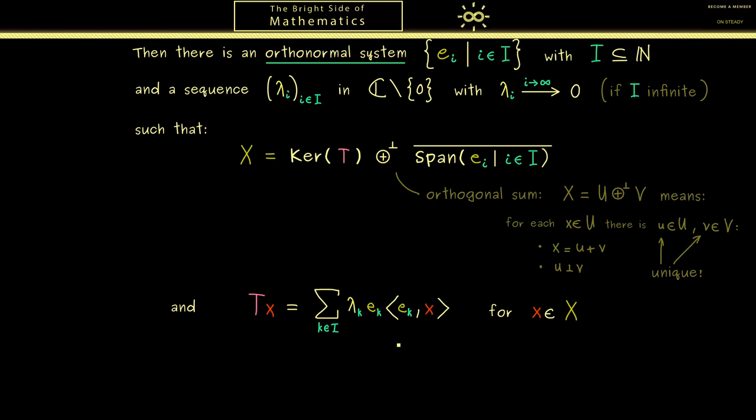Here also the last video helps, where we have discussed the spectrum of compact operators. In particular, you should know from this we can conclude that lambda_k is an eigenvalue and e_k a corresponding eigenvector. And please note here what we have here is that we can choose the eigenvectors as an orthonormal system. This is possible because we have self-adjoint or normal operators.